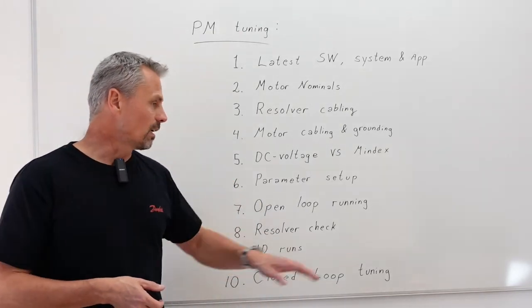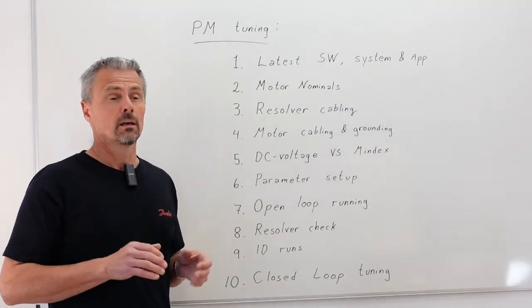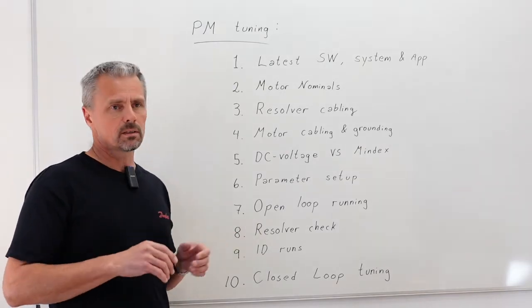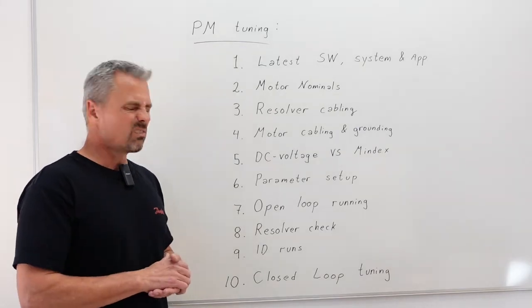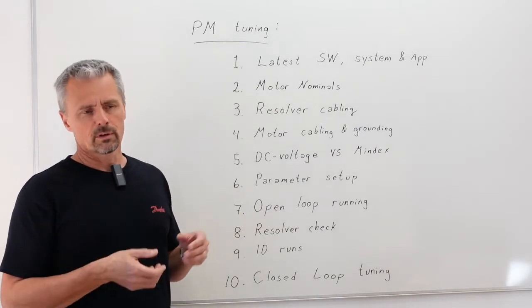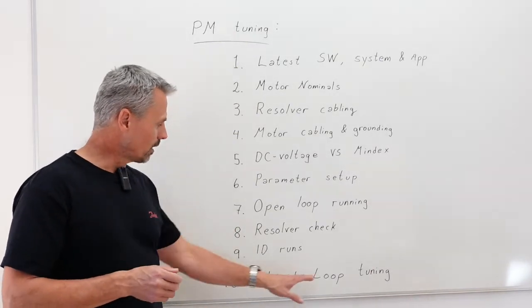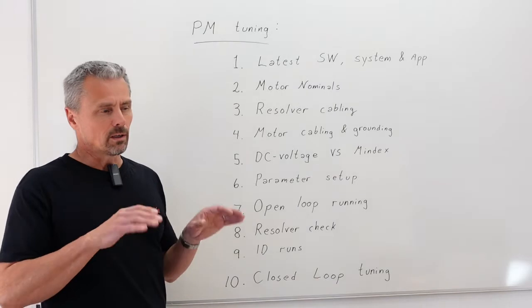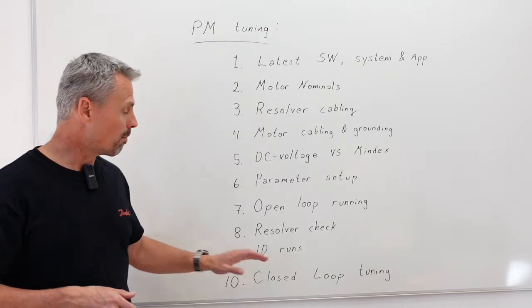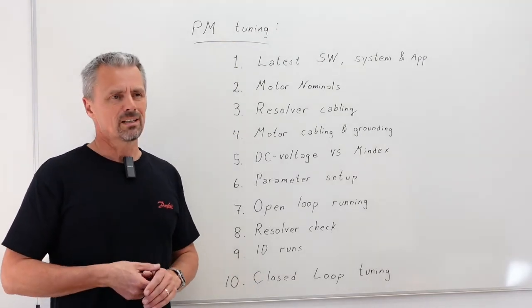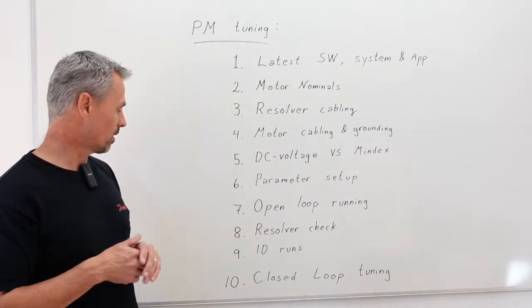Closed loop tuning - that is the final hand tuning where you adjust a little bit the amplification factors, integral times on the closed loop motor control. Take a look at filtering of the encoder signal in case you have some noise on the signal. So here you can do manual fine-tuning. Of course a lot is done with ID runs but the manual tuning in some cases will top that tuning to a smoother level.